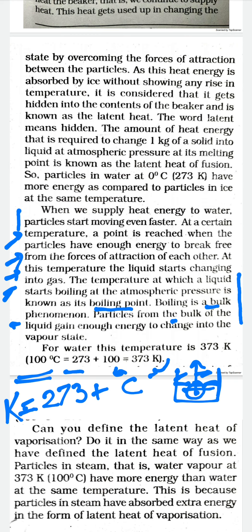When we start heating the liquid water, a temperature comes where there is no change in the thermometer reading. Where does the heat energy go? Because the heat energy is not being shown in the thermometer, this hidden heat is called the latent heat. Since we are talking about the conversion of water into vapors, this is the latent heat of vaporization.